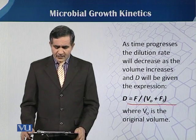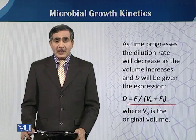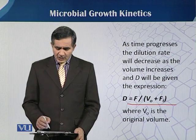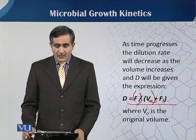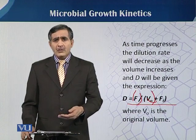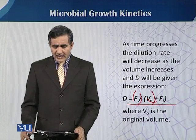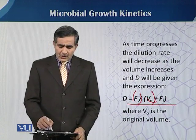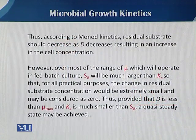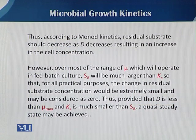If the dilution rate decreases as the volume increases, D can be expressed by this equation: D is equal to F over V-naught, where F is the flow rate and V-naught is the initial volume in the fermentation vessel when we start the feeding. Ft is the flow rate at that time. According to Monod kinetics, residual substrate should decrease as D decreases, because if we set our feeding strategy according to the limiting substrate.